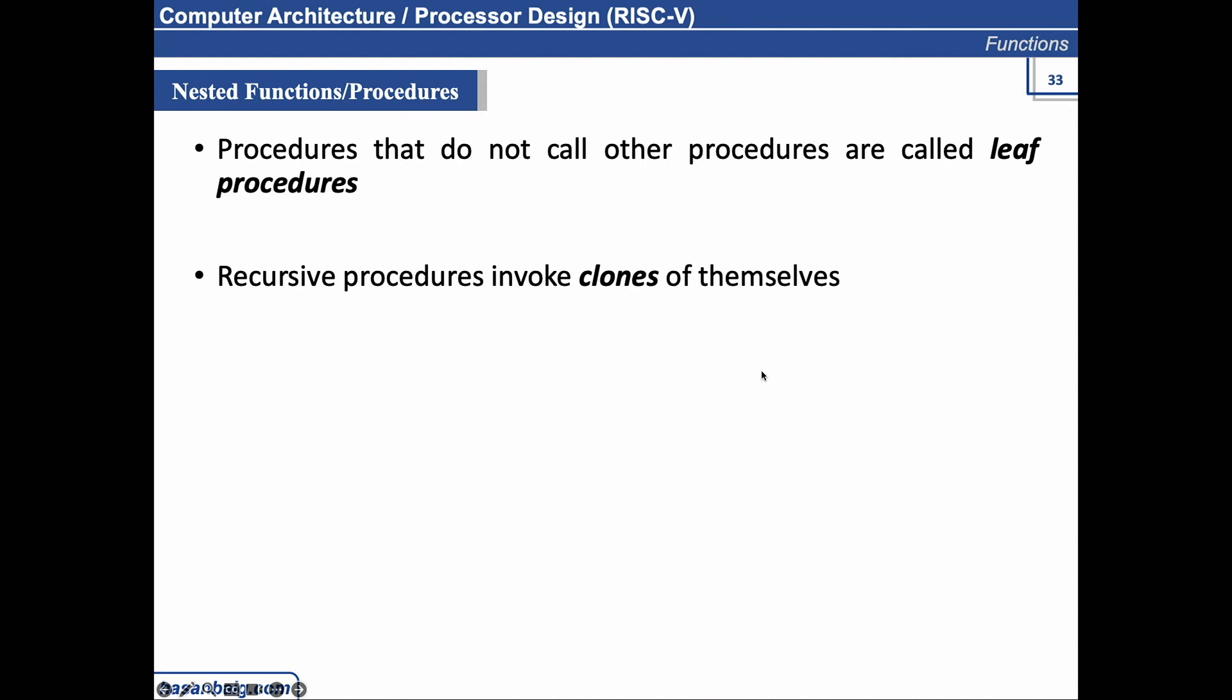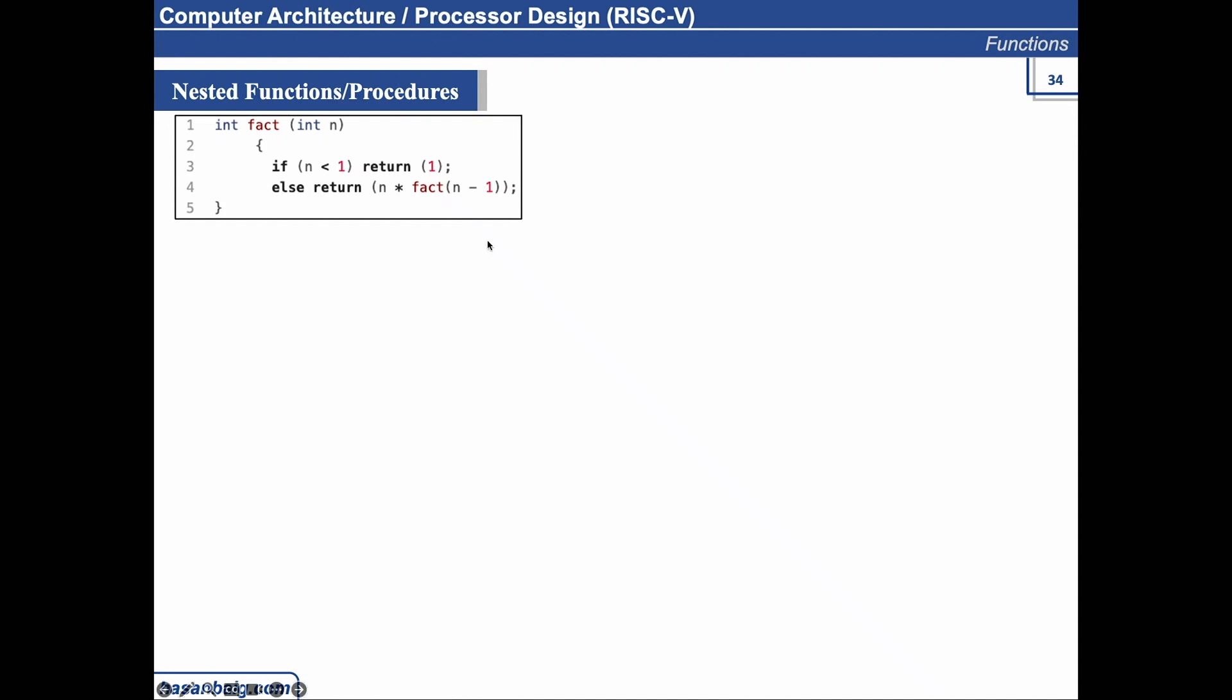Okay, so generally speaking, when the procedure is not calling itself, it is considered as leaf procedure. And the recursive procedure makes a clone of themselves. So recall the example which I started off with, giving you an idea of when I was teaching you about recursion. I took this as an example. Now this is implemented in C format. So what does this first line say? First of all, what does the first line say? Considering this is a C language format.